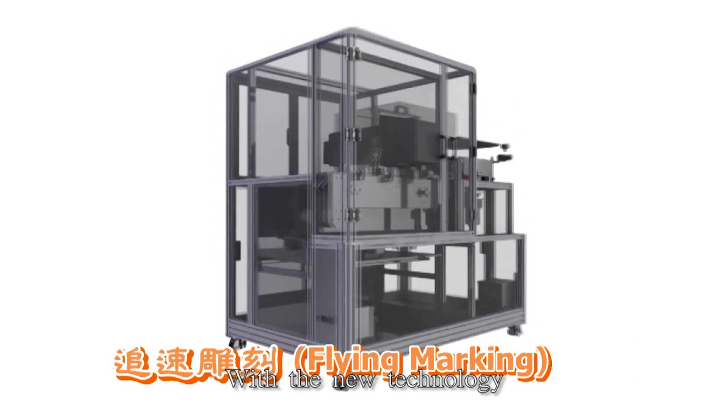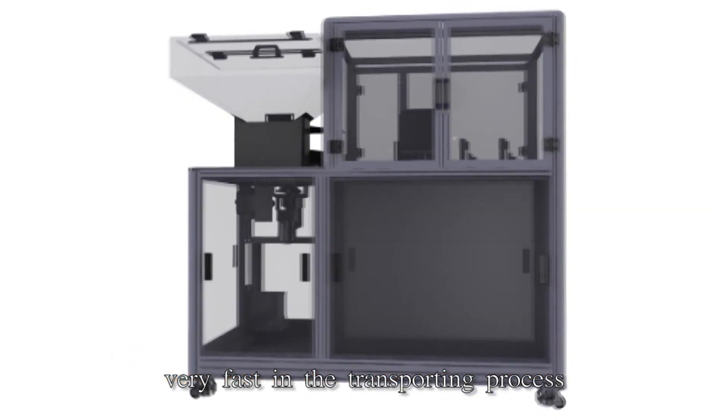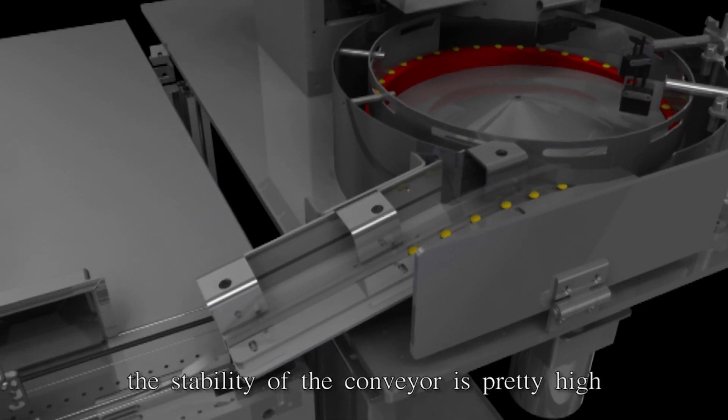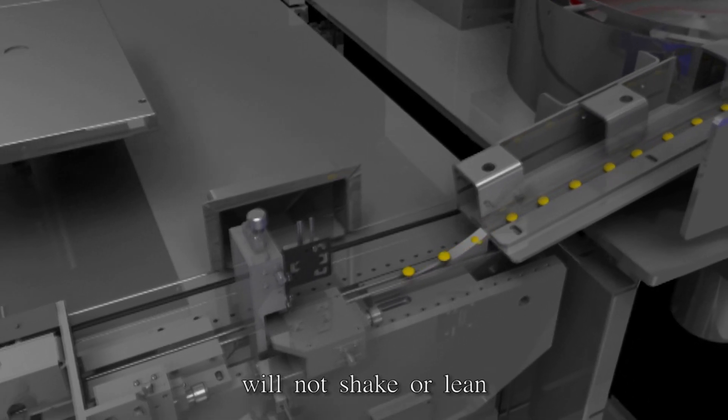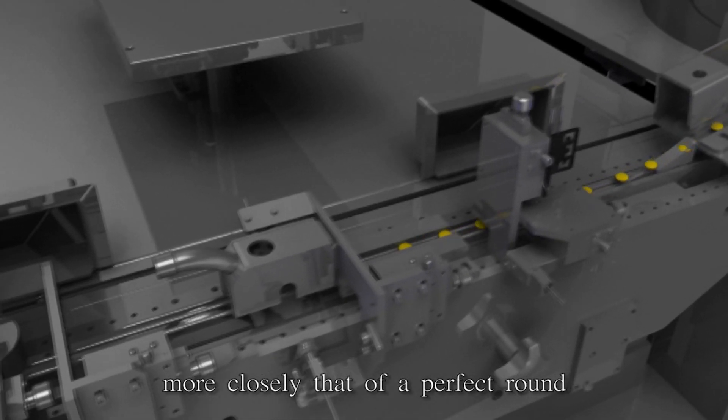With the new technology of flying marking, Yuan Cheng can punch the tablet very fast during the transporting process. Thanks to the advantage of fast punching, the stability of the conveyor is high, so the tablets will not shake or lean and the hole shape is more closely that of a perfect round.